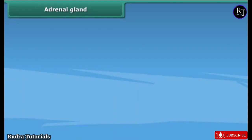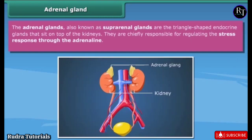The adrenal glands, also known as suprarenal glands, are the triangle-shaped endocrine glands that sit on top of the kidneys. They are chiefly responsible for regulating the stress response through adrenalin.